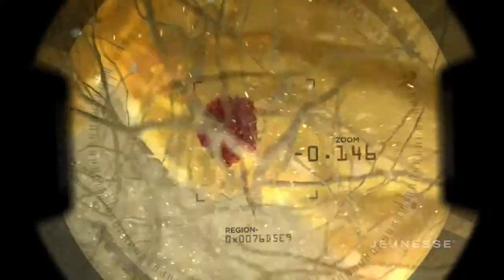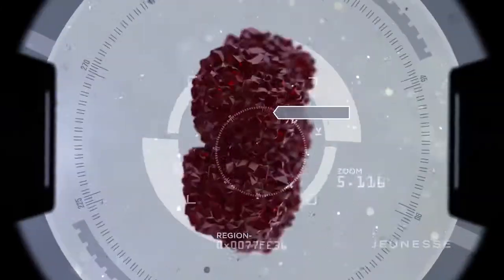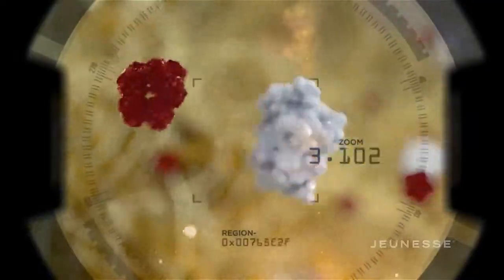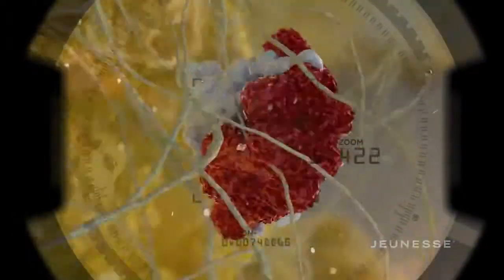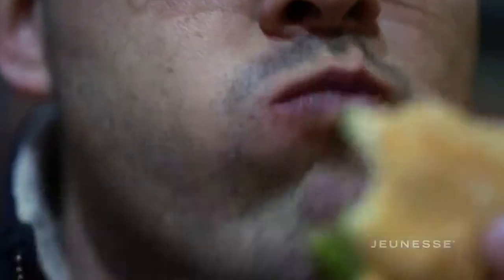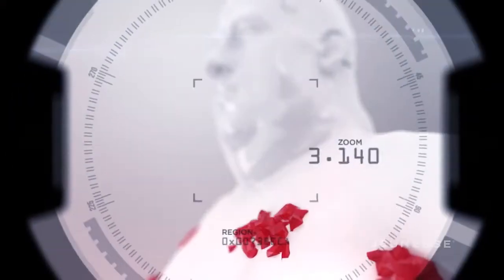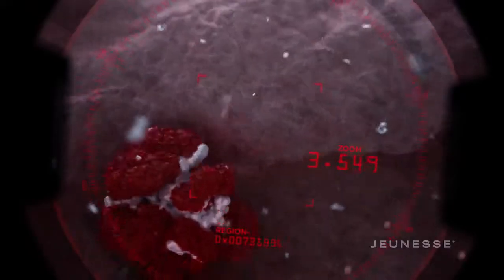But the problem starts when the fat cells begin releasing an inflammatory molecule known as C-reactive protein. When CRP fuses with leptin molecules, it blocks the critical message the brain desperately needs to tell the body it's full. The metabolism is now no longer balanced and the body goes into chaos.